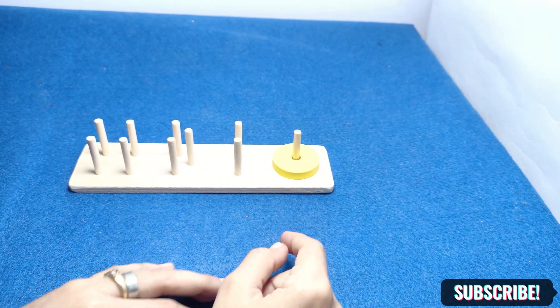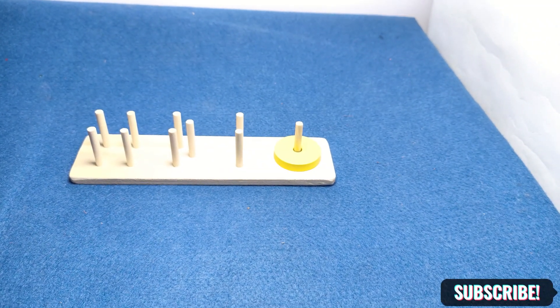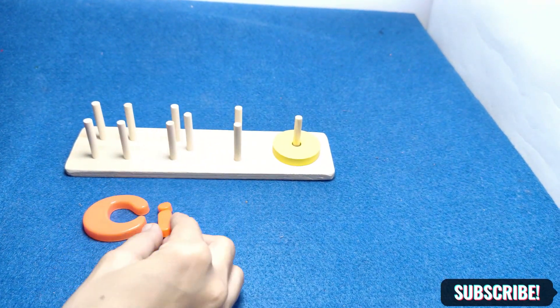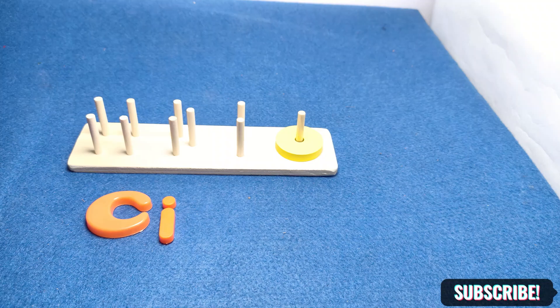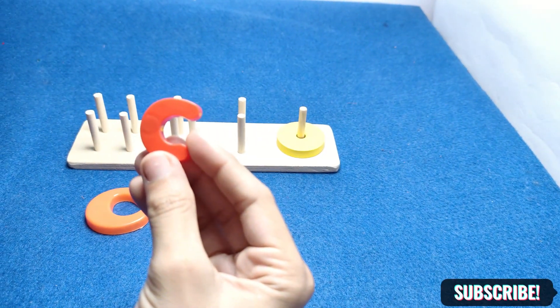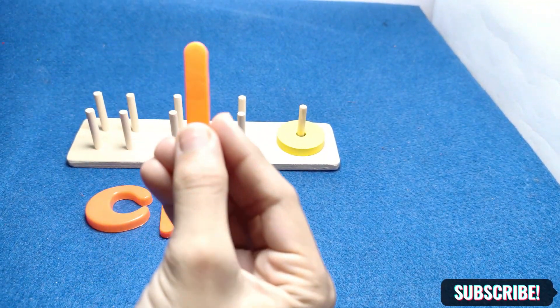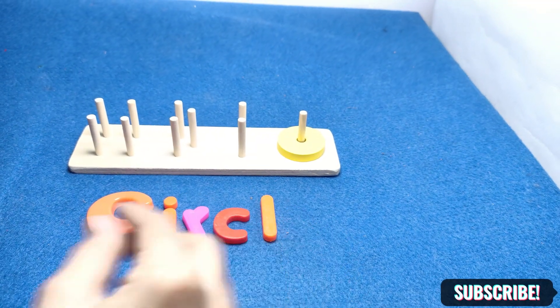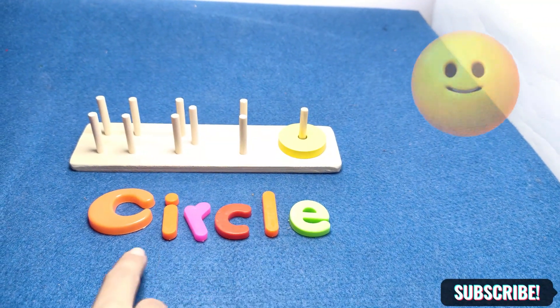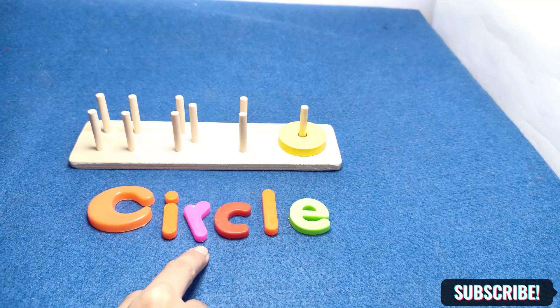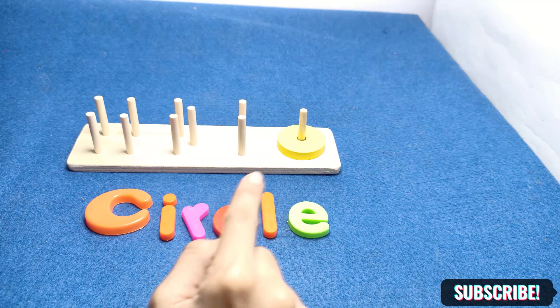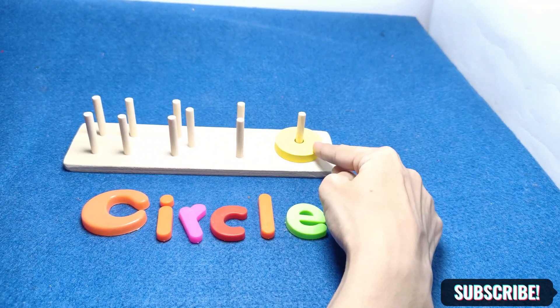Now spell with me: C-I-R-C-L-E. And E, what is this? This is called circle, C-I-R-C-L-E circle. A circle has only one hole, a yellow circle.